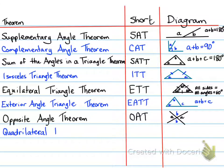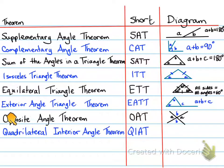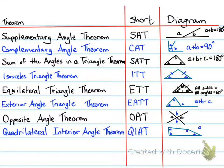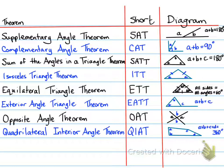Next is the Quadrilateral Interior Angle Theorem, or QIAT. A quadrilateral is a polygon with four sides, whereas a triangle has three sides. QIAT states that all the interior angles of a quadrilateral will always add up to 360 degrees.